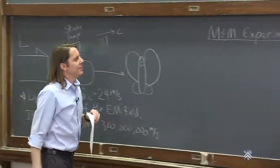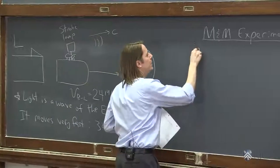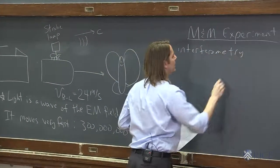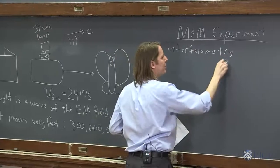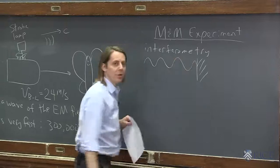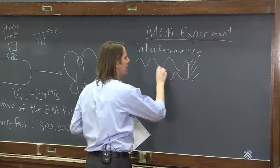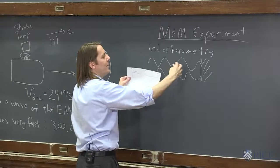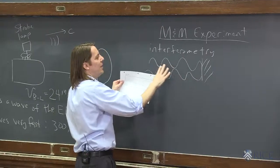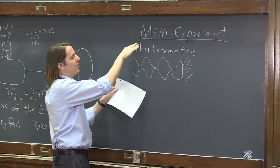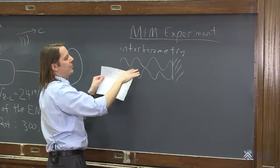And M&M detected it by a method called interferometry. And here is just the absolute basics of interferometry. If I shine some light at a mirror, it'll reflect back. And when it reflects back and overlaps with itself, it might be in a condition where the waves add and you get positive interference, or twice as big of a wave. Or it might be a condition where they cancel and you get zero.